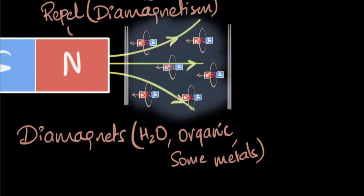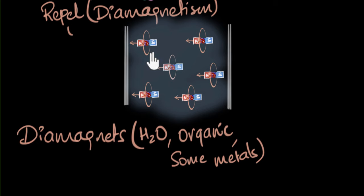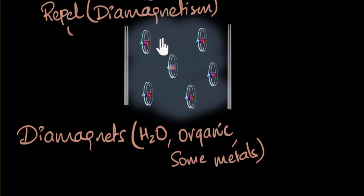What would happen if you take that magnet away? Would the magnetized water stay magnetized? Electromagnetic induction takes place again, but this time because the magnetic flux is decreasing, Lenz's law tries to increase it, so induction happens in the opposite direction. This completely kills the induced current and the water loses its magnetism. So diamagnetism is not only weak, but also a very temporary phenomenon.